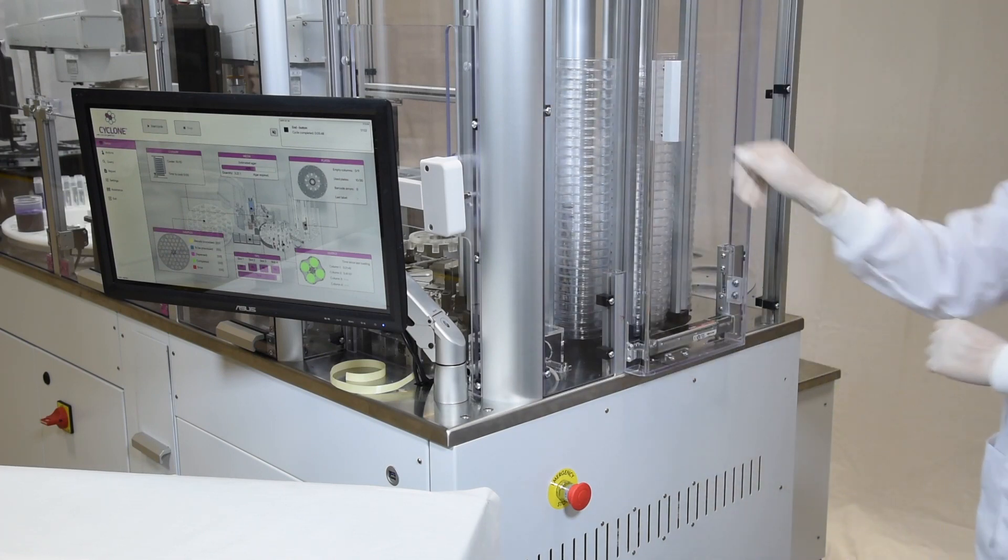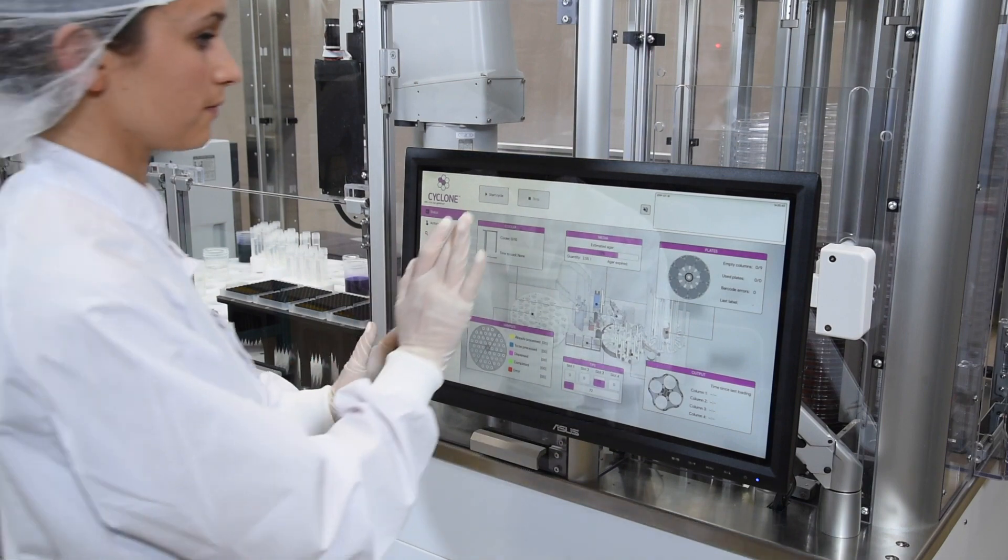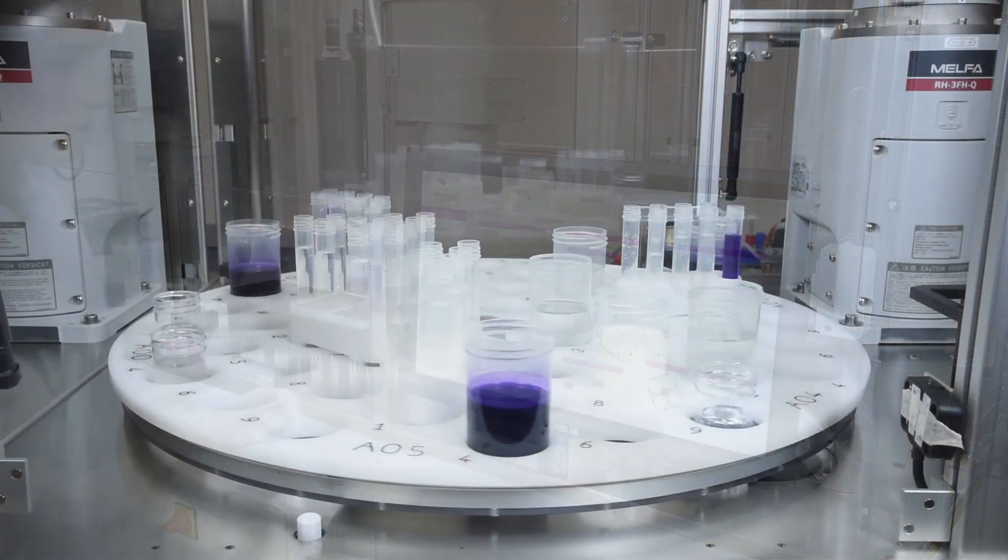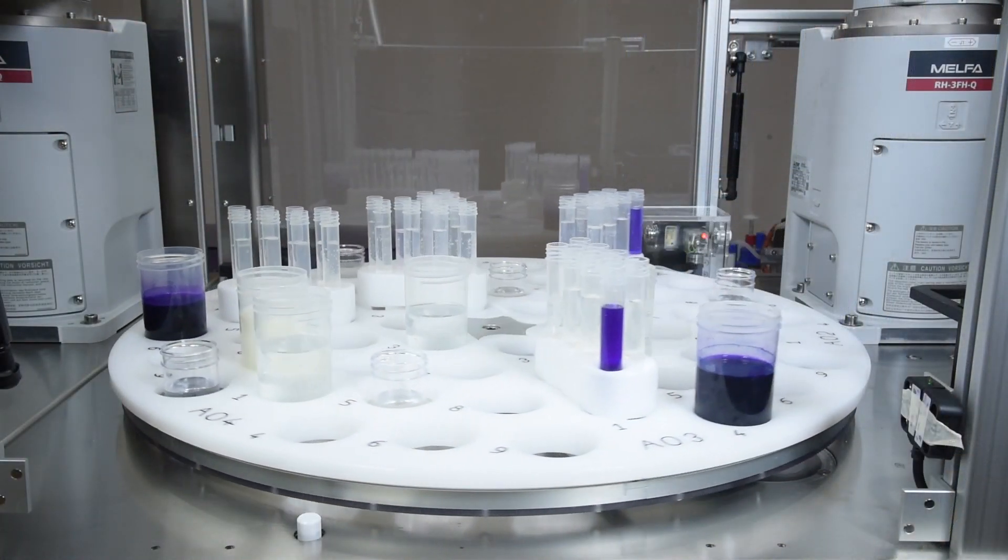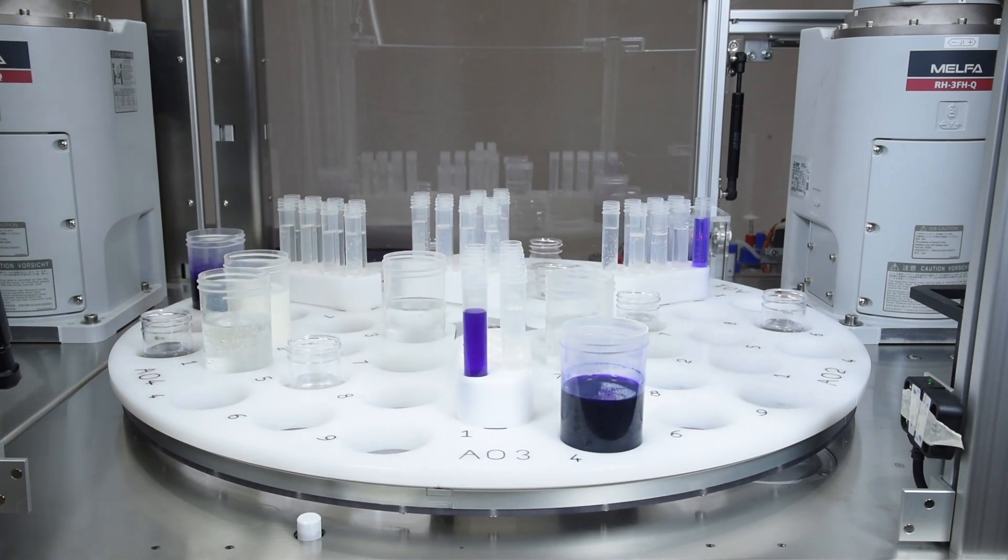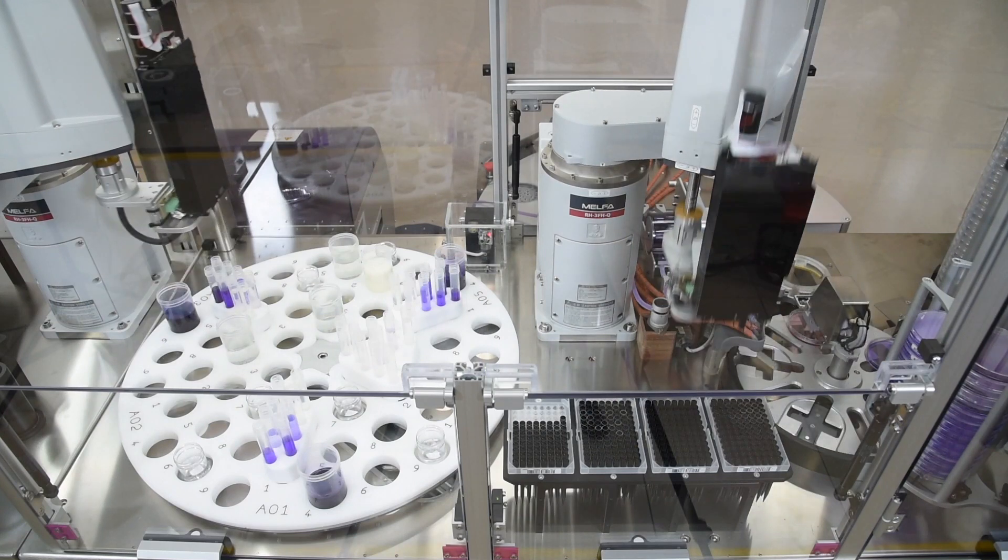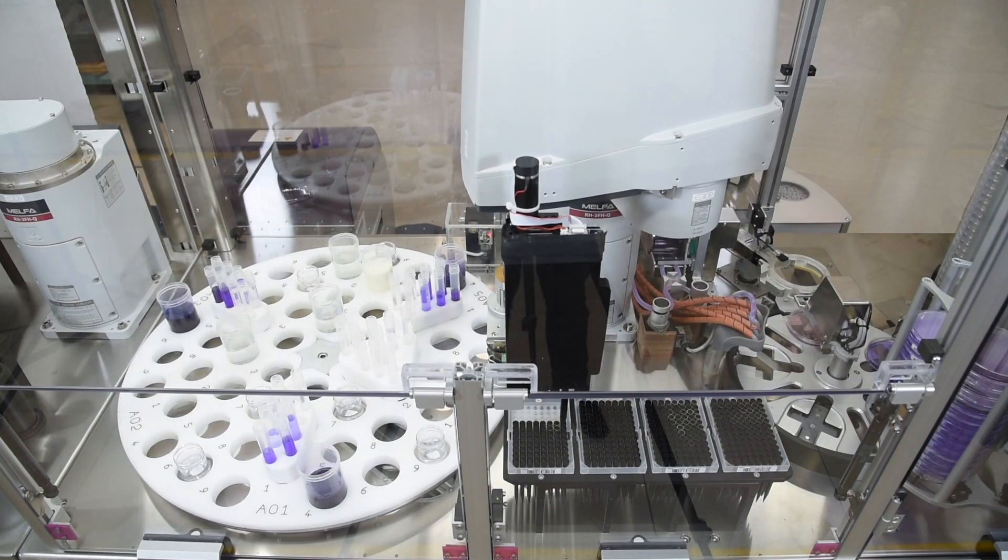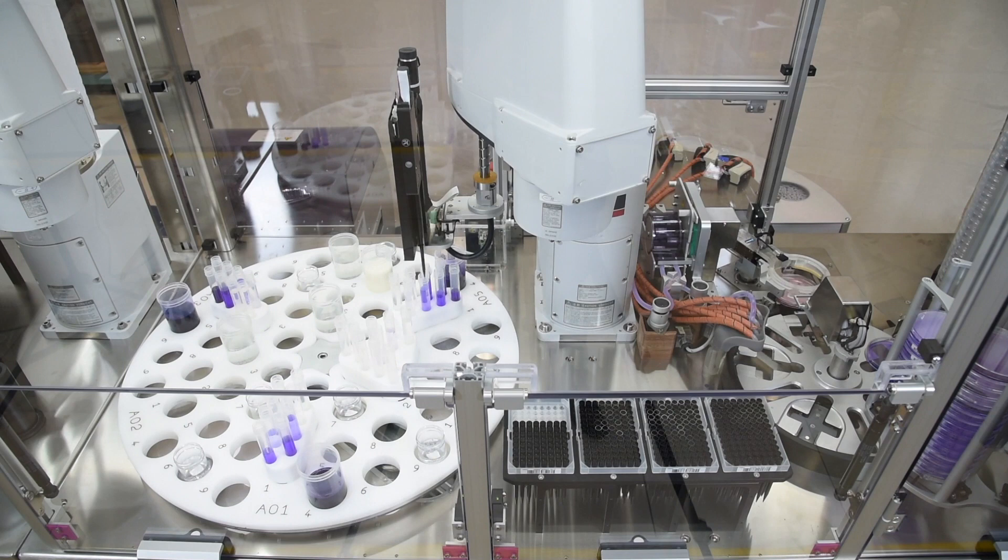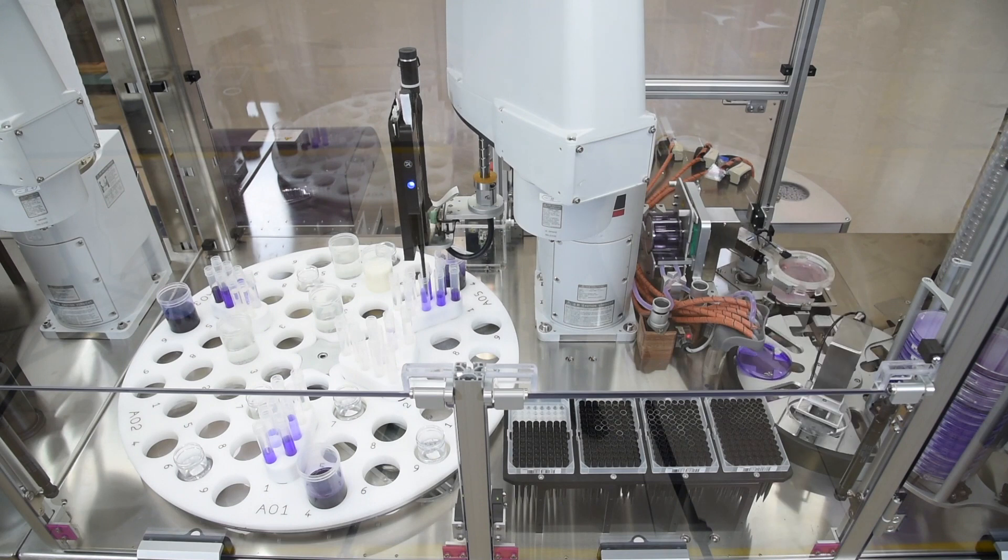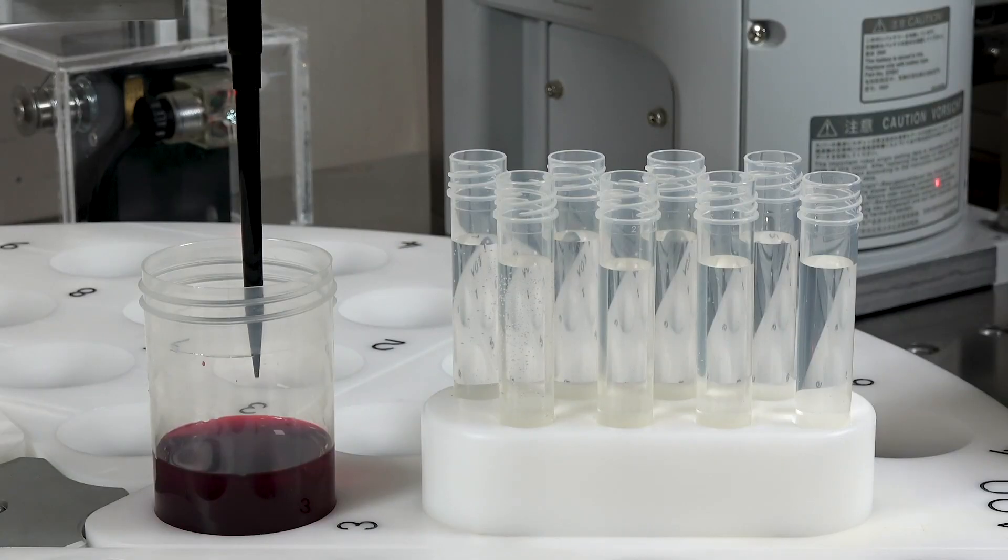With the simple press of a button, the system reads the sample label using smart scan technology and queries the LIMS for processing instructions. The Cyclone automatically communicates with the laboratory's information system to identify the sample, determine protocol settings, and record every step of the sample's journey for complete traceability.